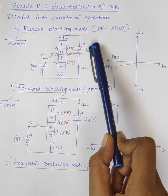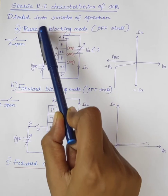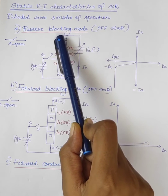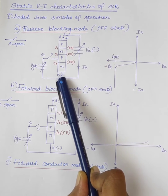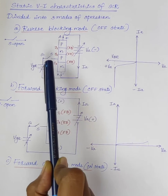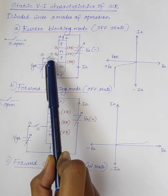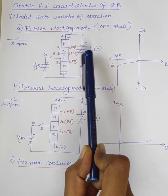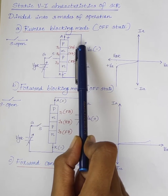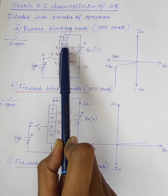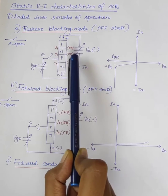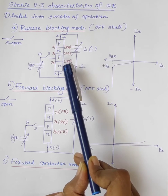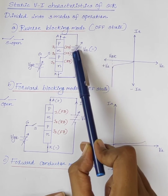First, consider reverse blocking mode. As the name indicates, the SCR is connected in reverse biased — that is, the anode of the SCR is connected to the negative of the supply and cathode is connected to the positive of the supply. Here we are providing the gate-cathode supply through a switch S, which is open. We can see that junctions J1 and J3 are reverse biased and junction J2 is forward biased, because N is connected to negative and P is connected to positive.